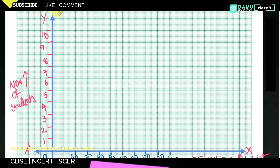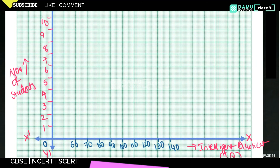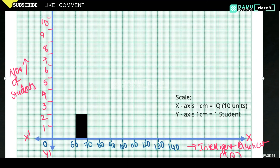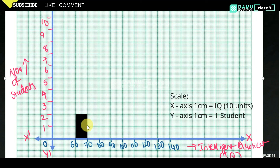Now we are going to build the histogram. For the first class interval, 60 to 70, the frequency value is 2. So from 60 to 70 we draw a bar up to height 2. Two students are in the 60-to-70 IQ range. Next, for 70 to 80, five members are there, so we draw a bar up to height 5.